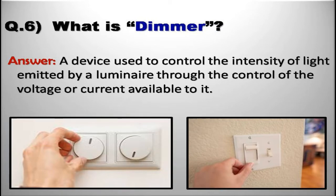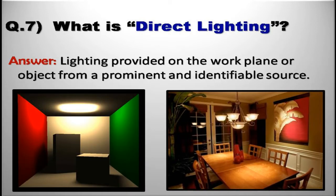What is dimmer? A device used to control the intensity of light emitted by a luminaire through the control of the voltage or current available on it. What is direct lighting? The lighting provided on the work plane or object from a prominent and identifiable source.